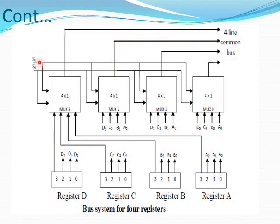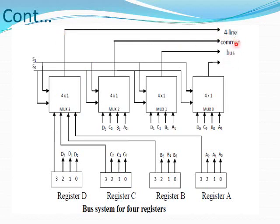If S1=0 and S0=1, then Register B is selected. Multiplexer 0 selects B0 as output, multiplexer 1 selects B1 as output, multiplexer 2 selects B2 as output, and multiplexer 3 selects B3 as output. These 4 bits are passed on the 4-line common bus.